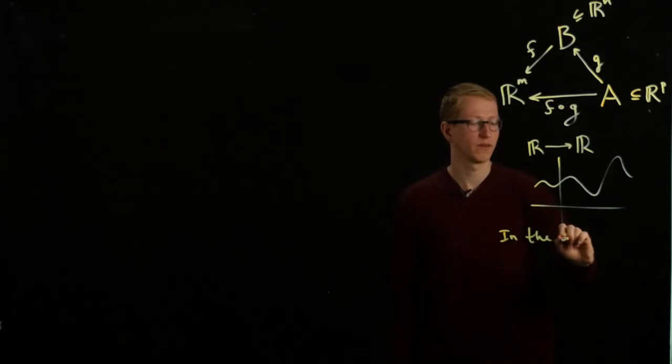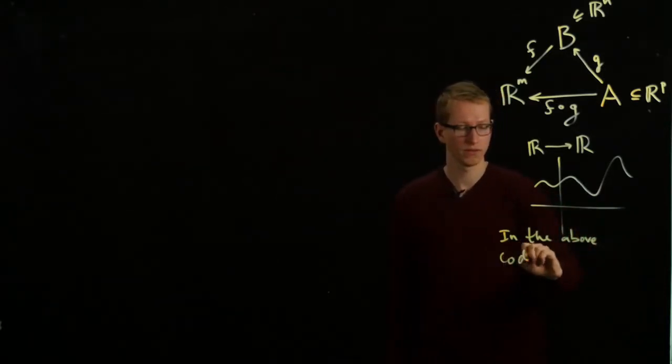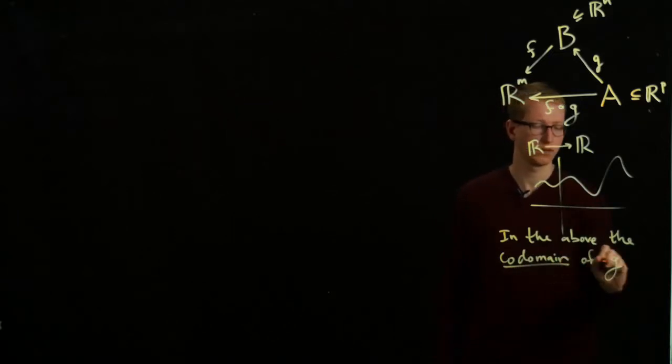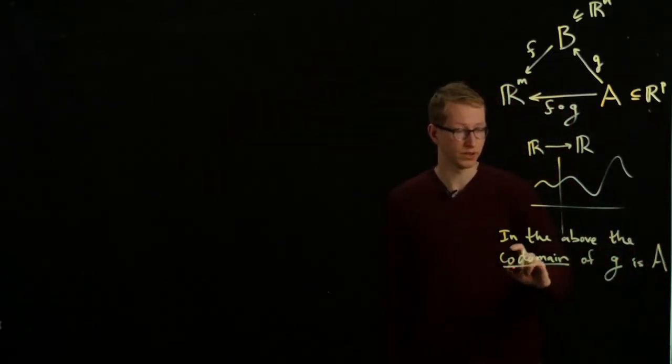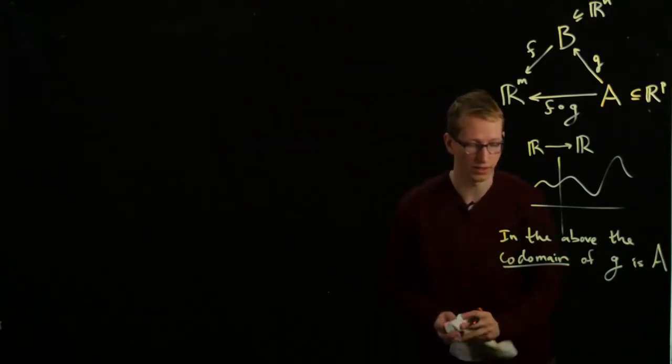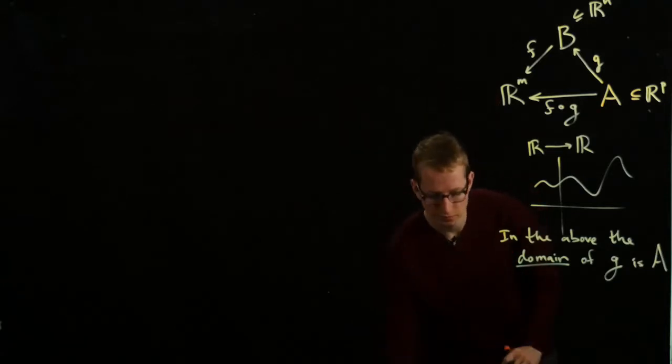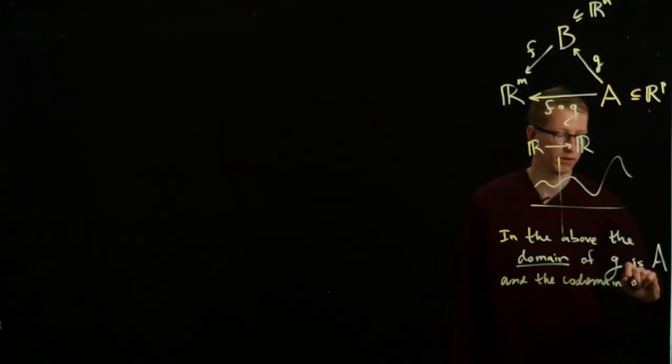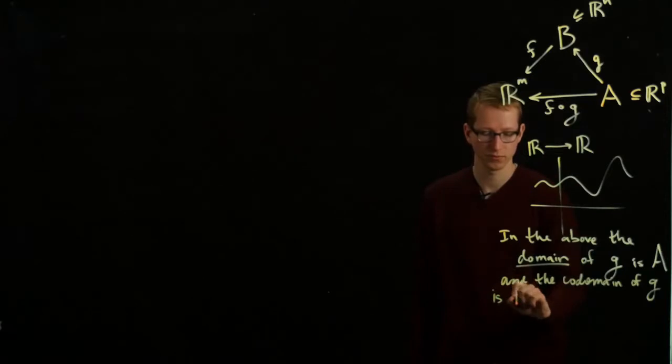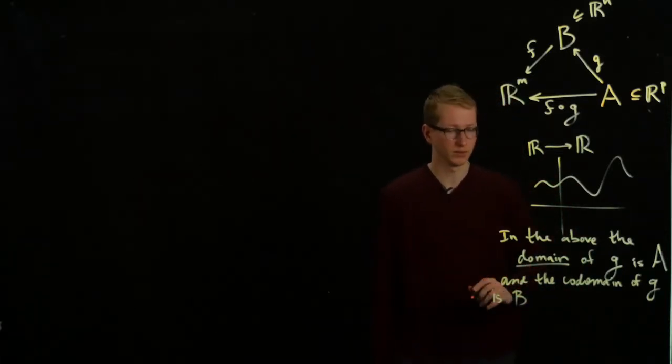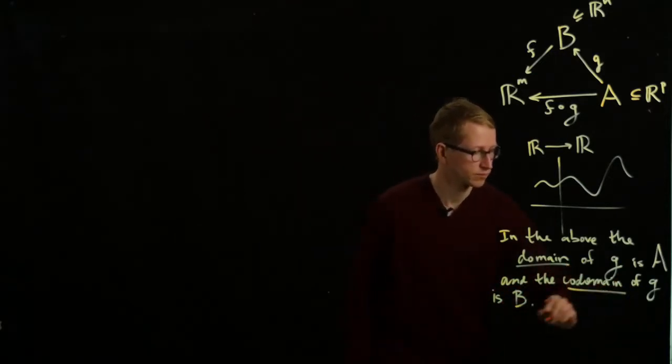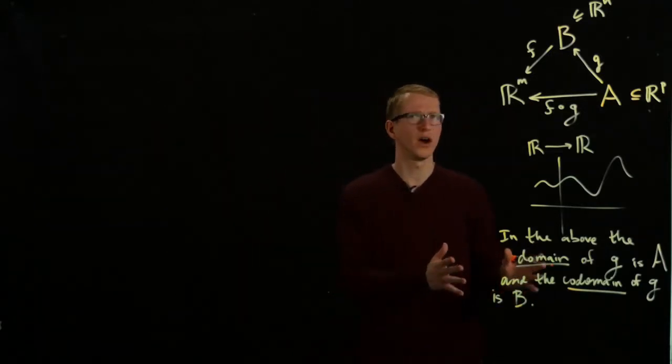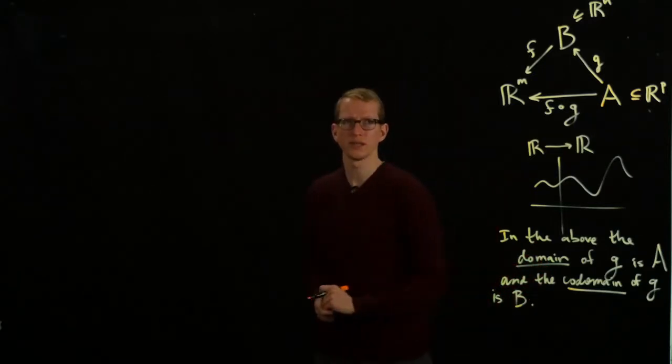In the above, the domain of G is A, and the codomain of G is B. You can also take the codomain of G to be R^n as well. What we're going to do is we're going to look at a few examples of functions with different domains and codomains. But for most of the time, our codomains and domains will just be Euclidean spaces themselves in totality.